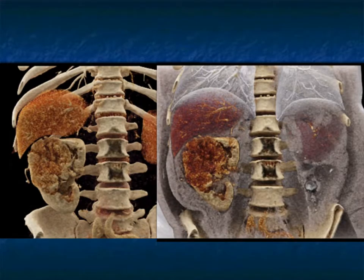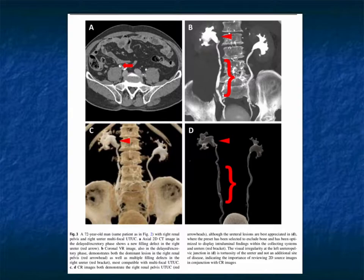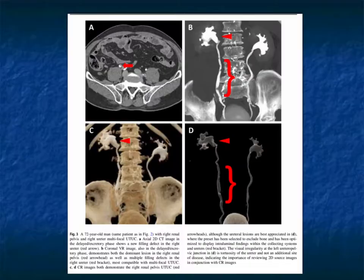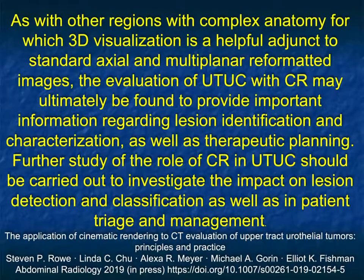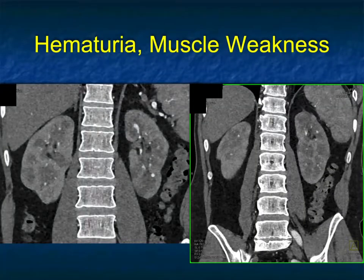Here are a few more different renderings — you can see how we can really accentuate the tumor-normal kidney interface. We've also shown how we can look at transitional cell tumors, the calyces, the ureter — that's in one of our articles and will be coming soon in one of our talks. The use of cinematic rendering for urothelial tumors is very real — the ability to look at the calyces in 3D, the ureter and bladder, all become very valuable.